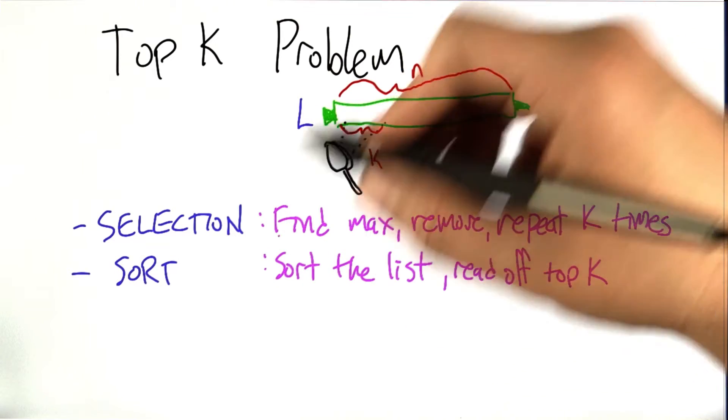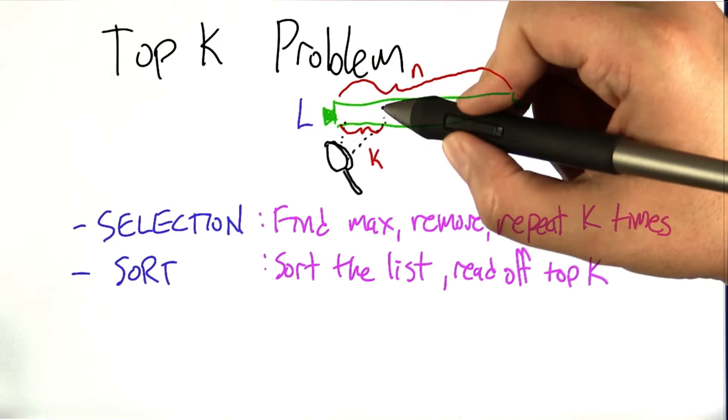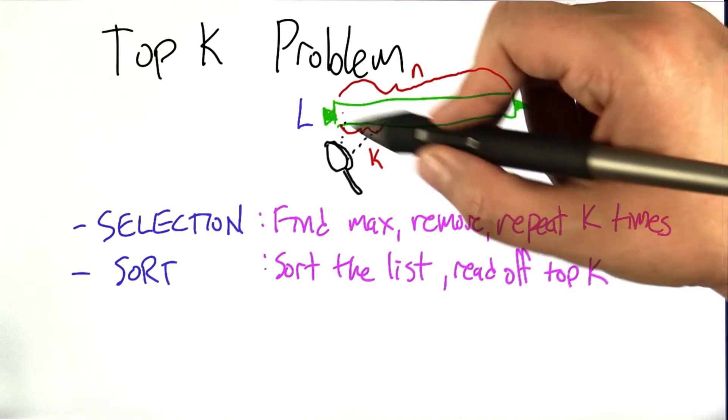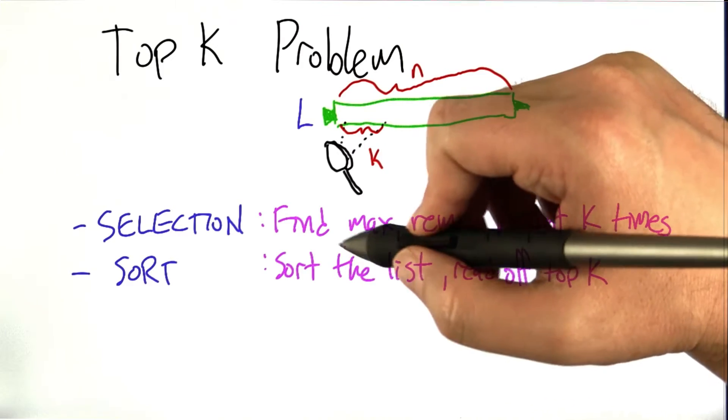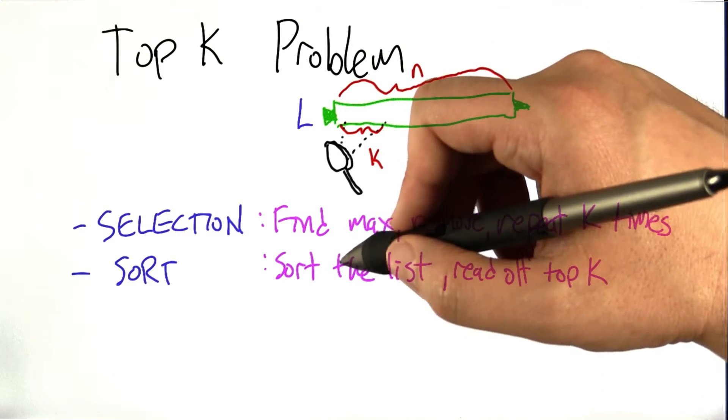So another natural thing to do is just sort the whole list. Once we've sorted the whole list, the first K elements of that sorted list are exactly the ones that we want. So this is actually a very simple way of doing it. In Python, it could just be essentially 1 or 2 statements.